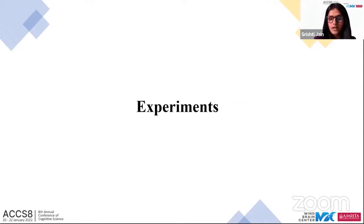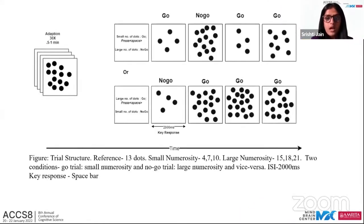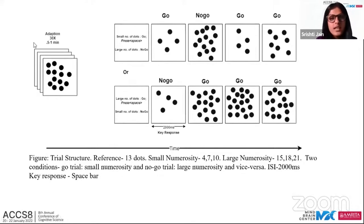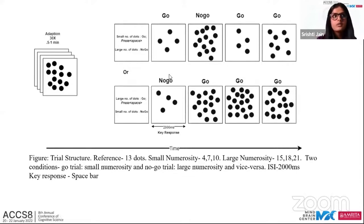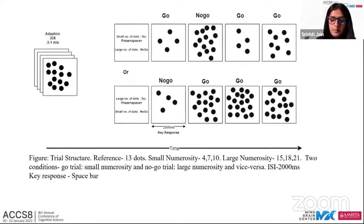We designed two experiments. Experiment 1 is based on relative numerosity comparison judgment. Participants were first adapted with a reference numerosity of 13 — an adaptation block consisting of 30 displays each showing 13 dots. The test block that followed comprised 400 trials; for each trial, participants compared the displayed numerosity to the reference and responded accordingly.